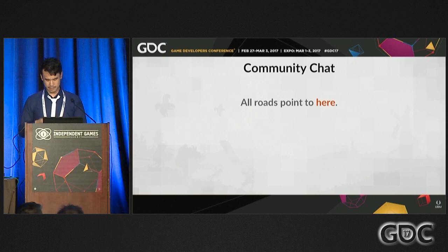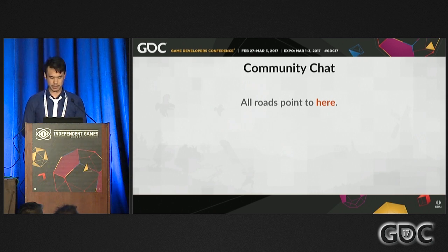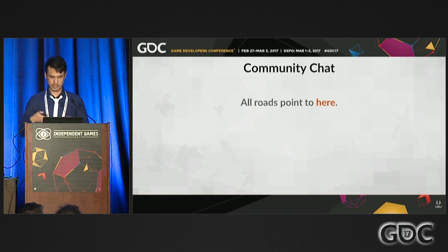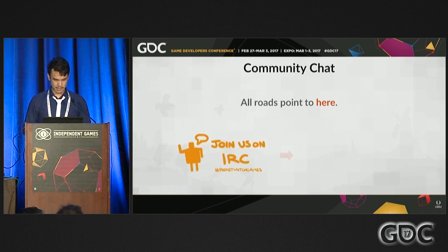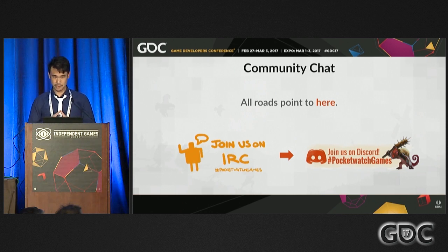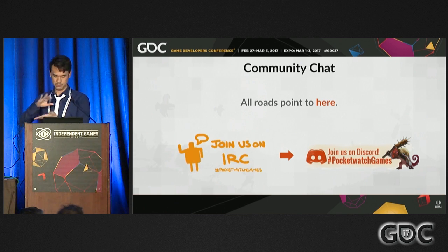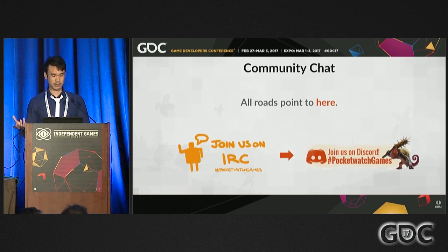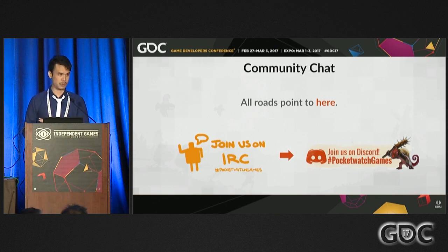We made sure all our marketing avenues — Steam forums, tweets, Tumblr — funneled people to the community chat as a direct line to community members. It started with IRC, which worked but isn't user-friendly — it's like a thousand years old. Then Discord came out around October 2016, and this application changed the face of how we approach community entirely.